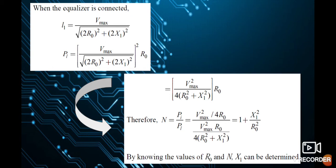When the equalizer is connected, the current is I1 = Vmax / √((2R0)² + (2X1)²), where we add the squared values of the two passive components and take the square root. The load power is then PL = I² · R0 = Vmax² / ((2R0)² + (2X1)²) · R0, which simplifies to Vmax² · R0 / (4(R0² + X1²)).